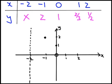So let's make a dot there. At 0, we had 1. At 1, we had 2 thirds. At 2, we had a half.